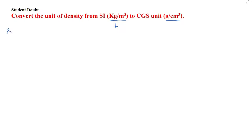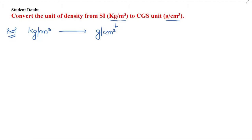So let's write what your target is: you have to convert kg per meter cube to gram per centimeter cube. So this is definitely what we will do — first we will look at kg and gram, and meter and centimeter.